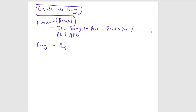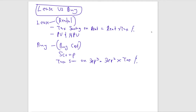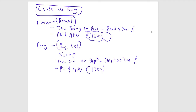For the buy option, consider the purchase cost, scrap value, and tax saving on depreciation (depreciation × tax percentage), then calculate the present value and NPV. Choose the option with the lowest cost (least negative NPV). For example, lease NPV of -1,000 is better than buy NPV of -1,200, so the lease option is preferred.